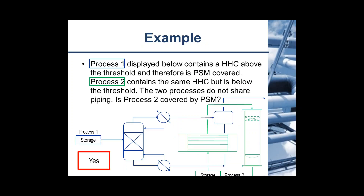In this example, there are two processes: process 1, shown in blue, and process 2, shown in green. Process 1 contains an HHC above the threshold and therefore is PSM-covered. Process 2 contains the same HHC but is below the threshold. The two processes do not share piping. Is process 2 covered by PSM? As you can see from the picture, there is no interconnecting piping and both chemical processes are completely separate. However, OSHA's PSM standard states that multiple separate vessels located such that both could potentially be involved at one time in an accidental release are considered to be a single process. Therefore, process 2 is PSM-covered.